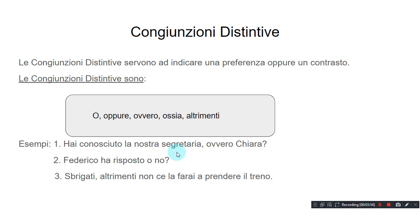Esempi. Hai conosciuto la nostra segretaria, ovvero Chiara? — Have you met our secretary, namely Chiara? Federico ha risposto o no? — Did Federico reply or not? Sbrigati, altrimenti non ce la farai a prendere il treno — Hurry up, otherwise you're not going to make it to catch the train.